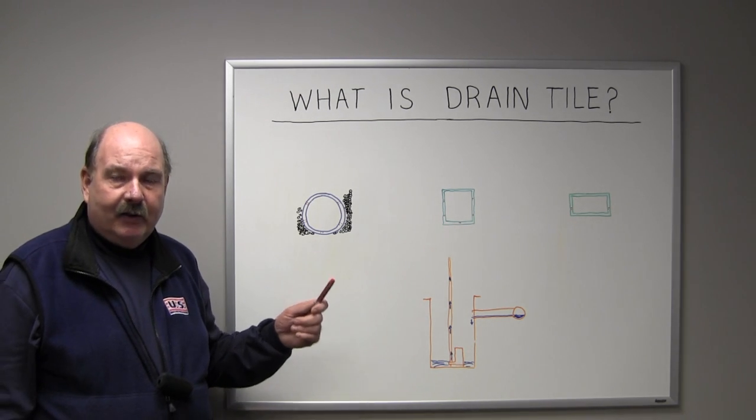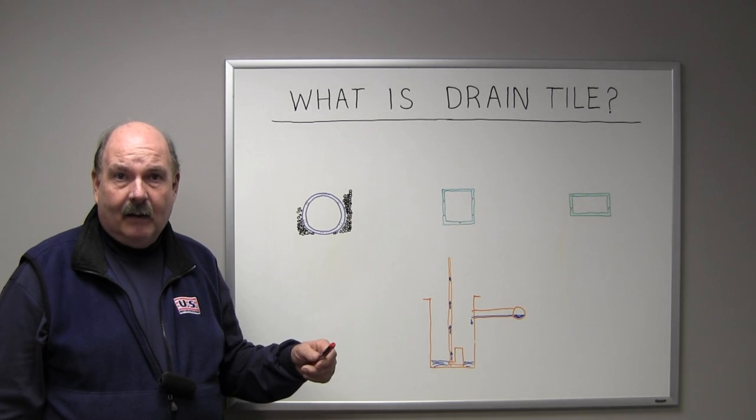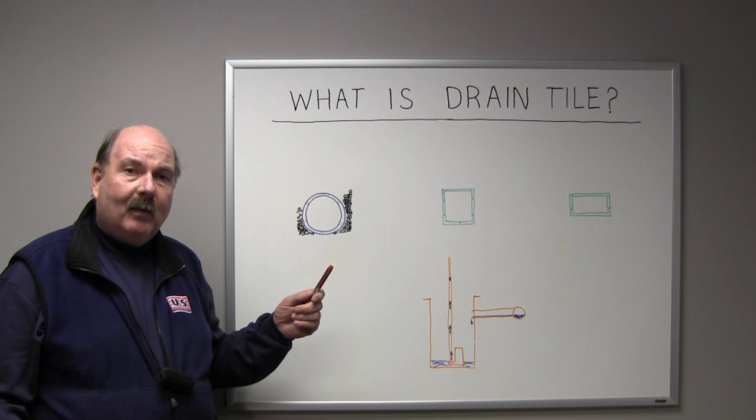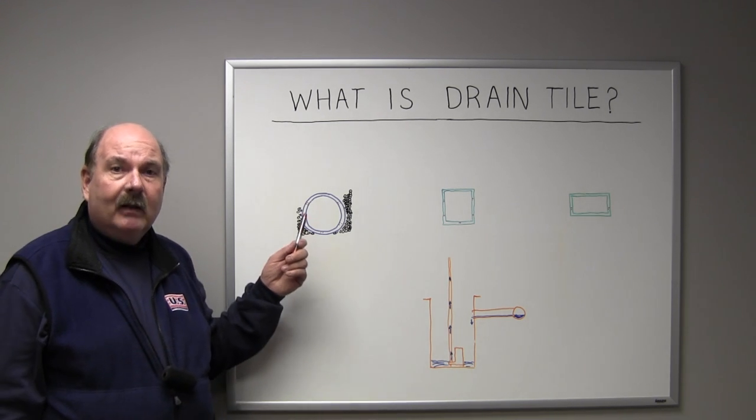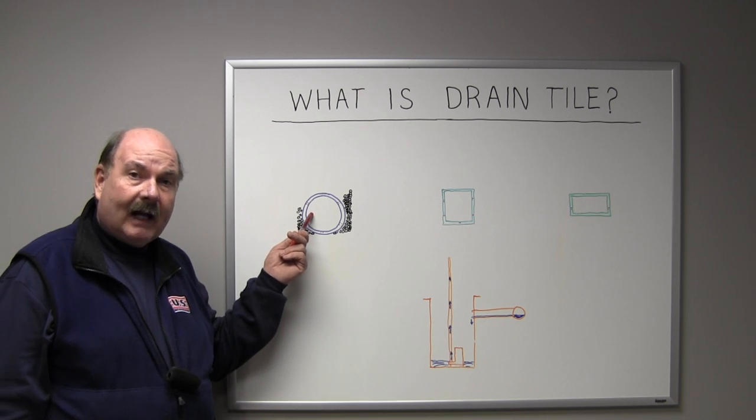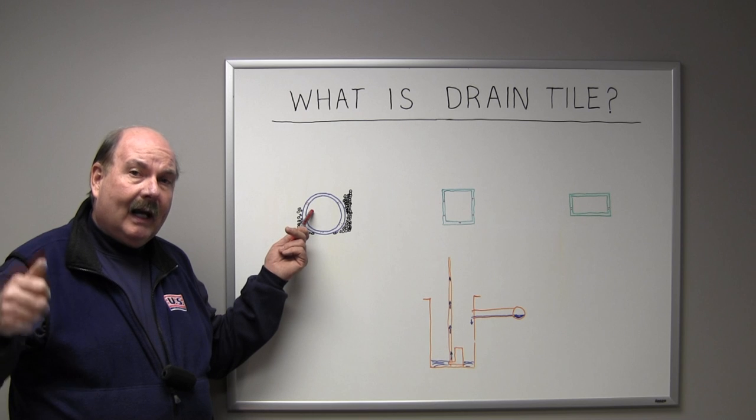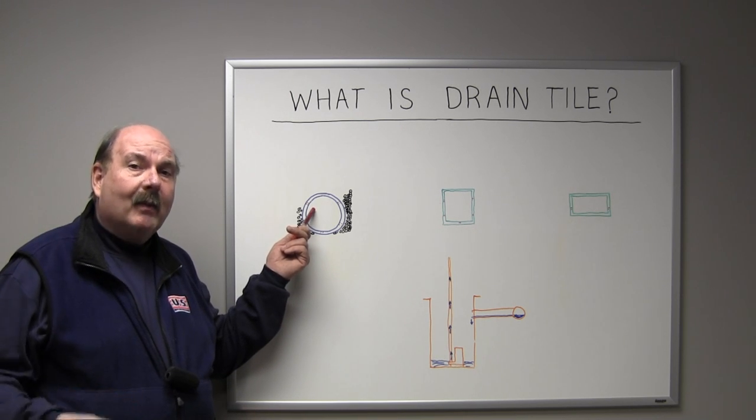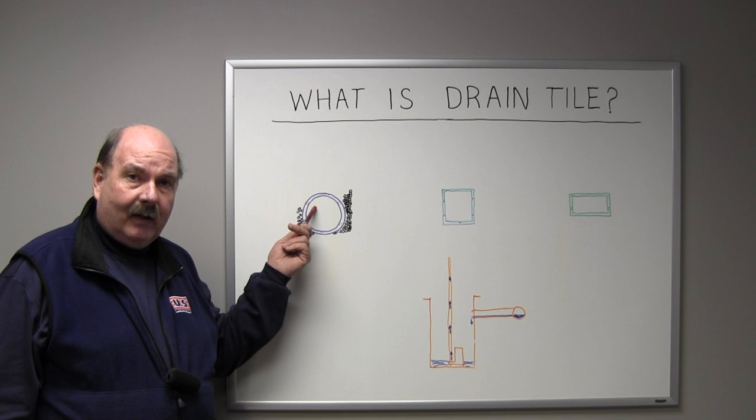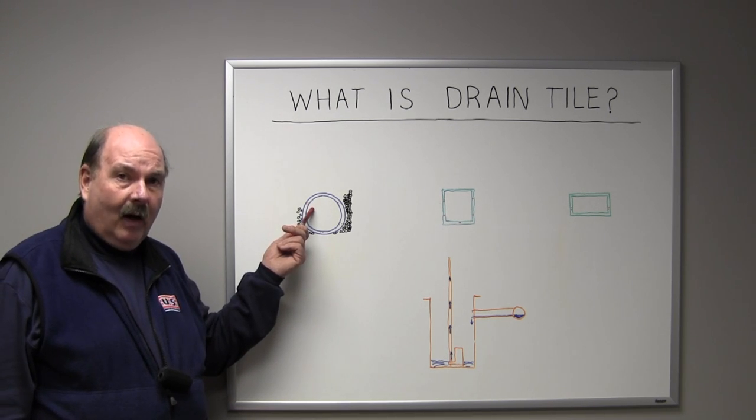The first thing to understand is drain tile has nothing to do with tiles on your floor. Most probably the term tile came from the original drain tile used around homes, which were round terra cotta clay, orange in color. They use this orange clay on roofs and call them roof tiles. Most probably that's where the term tile came from, but it has nothing to do with its ability to drain water.